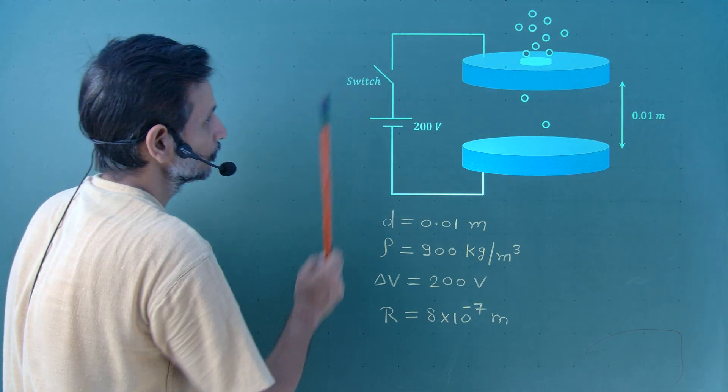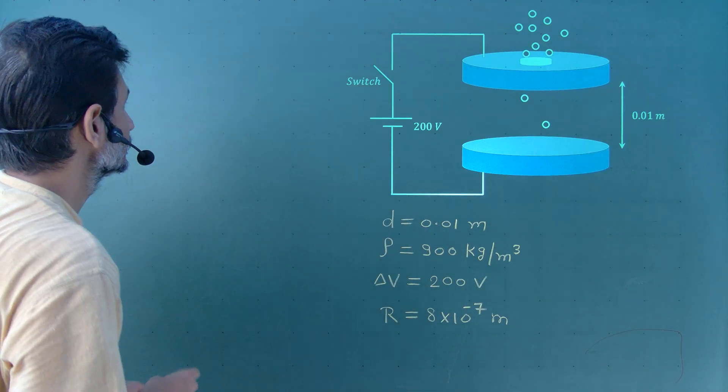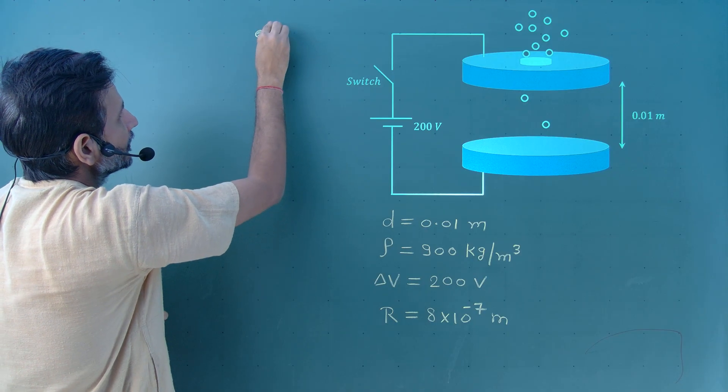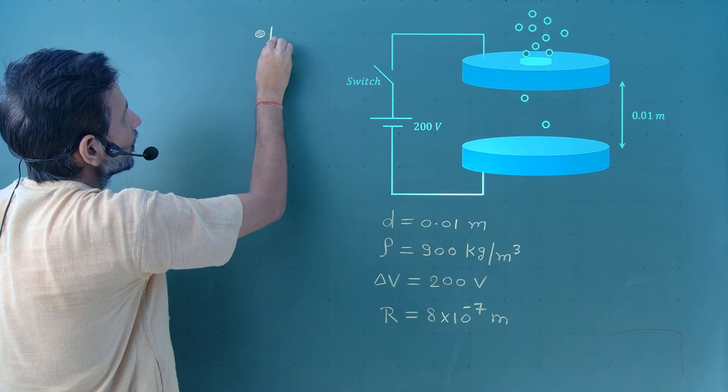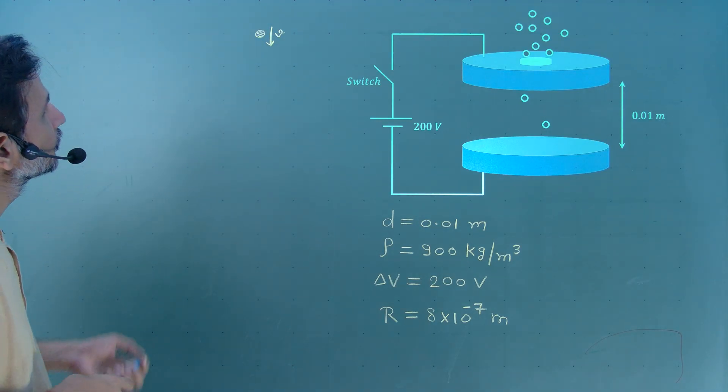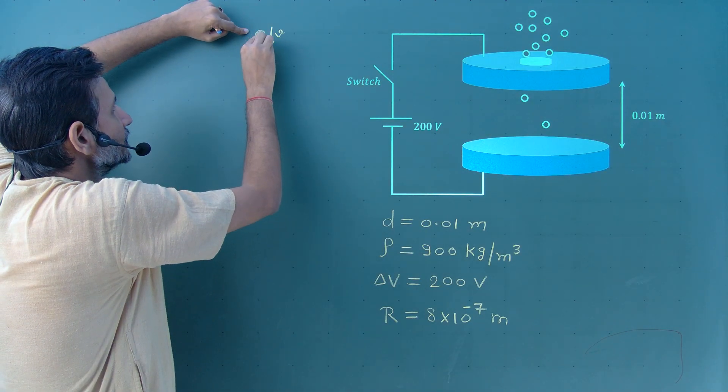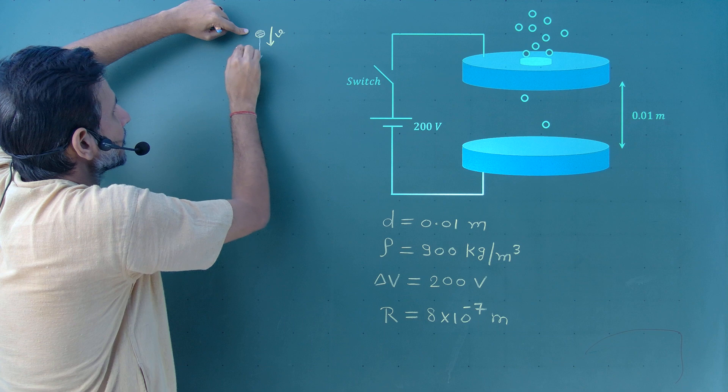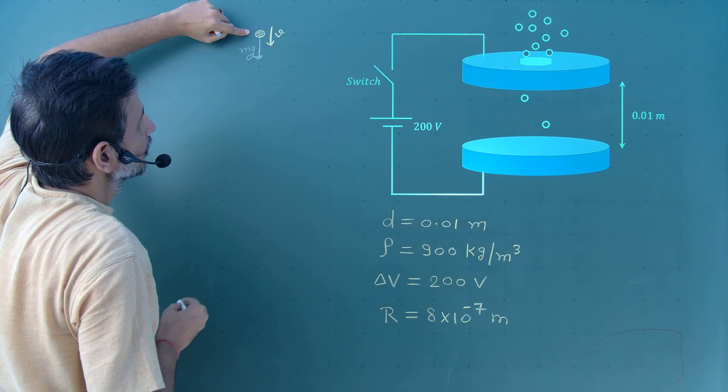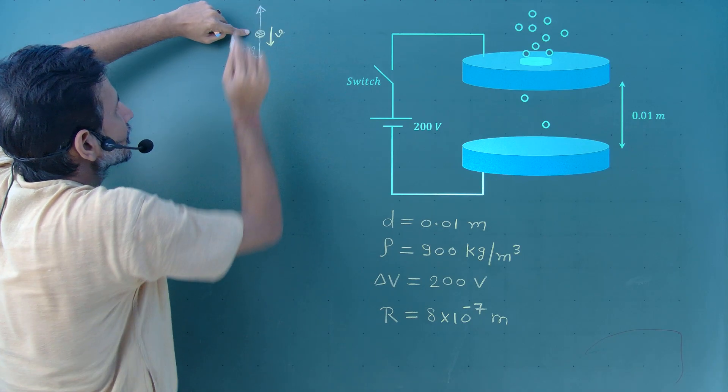Now, initially, switch is open and some drops are falling down with terminal velocity. What this means is, let's say one drop is moving with velocity V downward. And this is the terminal velocity. It means the total force on this drop is 0. What are the forces? One force is mg which is acting downward. And the second force is Stokes' law viscous force.